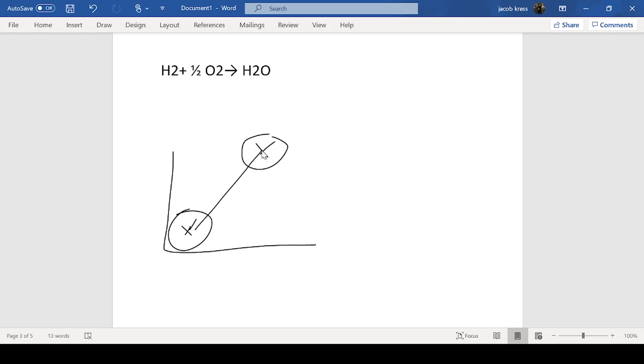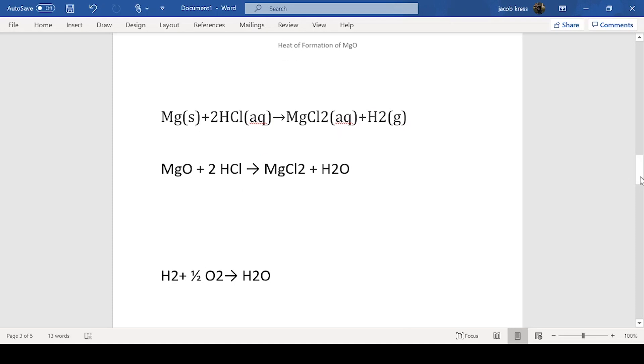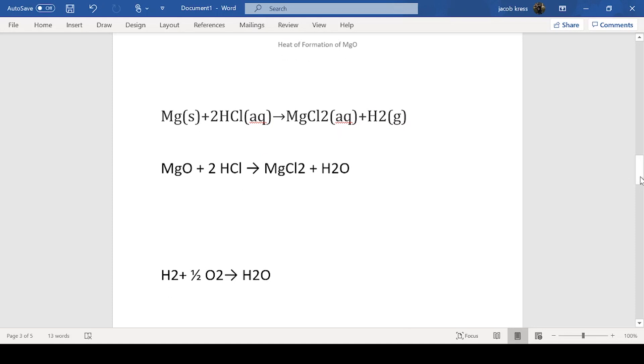You can either take the direct route to it or you can take a meandering route. As long as your initial and final states are the same, you'll get the same answer. Which is nice for us because it lets us calculate our heat of formation of magnesium oxide even though we're not directly making magnesium oxide. We're actually using magnesium oxide in one of the steps.